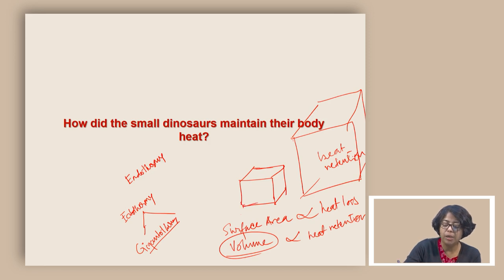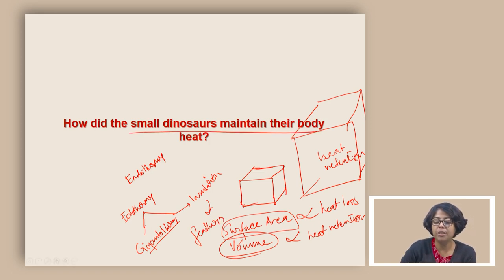For smaller dinosaurs like these cubes, it is very difficult to maintain the body heat simply because of the larger surface area. They needed some way of insulation and that insulation came from feathers. The small dinosaurs maintain their body heat by having feathers which insulated the body heat.